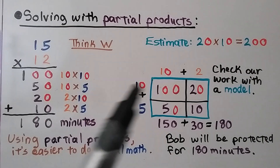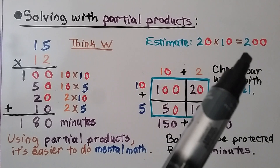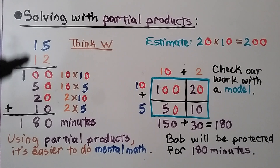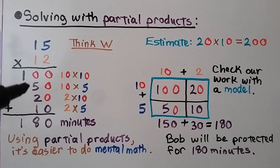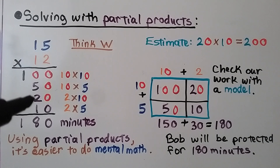Solving with partial products: 15 times 12. We estimate first — 15 rounds to 20, 12 rounds to 10, giving an estimate of 200. Using partial products, we start with the tens place: 10 times 10 is 100, then 10 times 5 is 50, then 2 times 10 is 20, and 2 times 5 is 10. We add the partial products and get 180 minutes. This is reasonable because our estimate was 200.